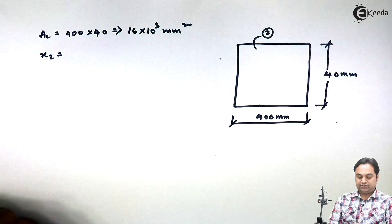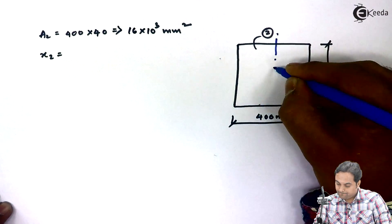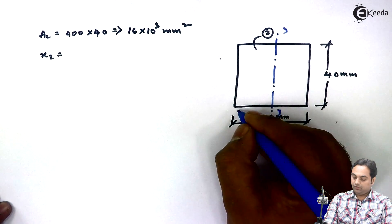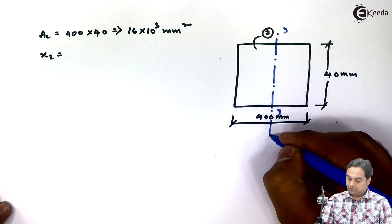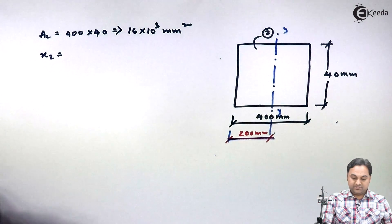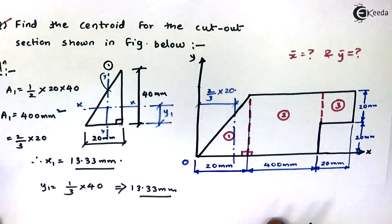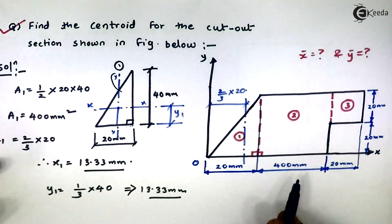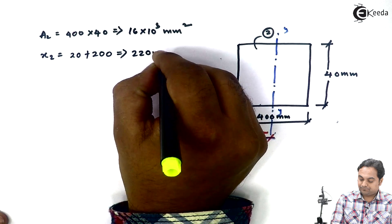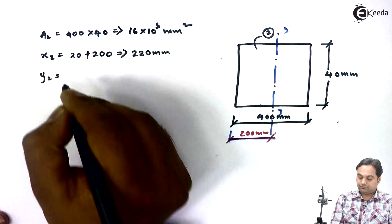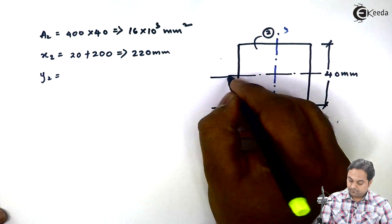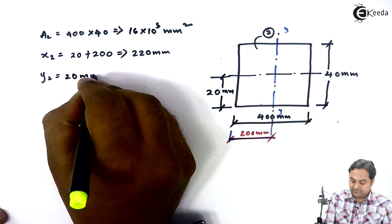x2 is equal to the location of y axis, and that will be exactly at half. So y axis is located at 200 mm distance. But since we are measuring the distances from the origin, here I have 20 plus 200, so x2 will be 220 mm. Y2 will be half of 40 mm, so y2 is 20 mm.